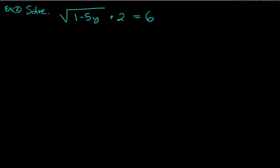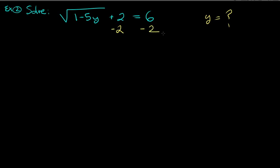Let's move on to another problem. We want to solve: the square root of (1 minus 5y), plus 2 — notice the plus 2 is NOT under the square root — equals 6. Our goal is to find y.